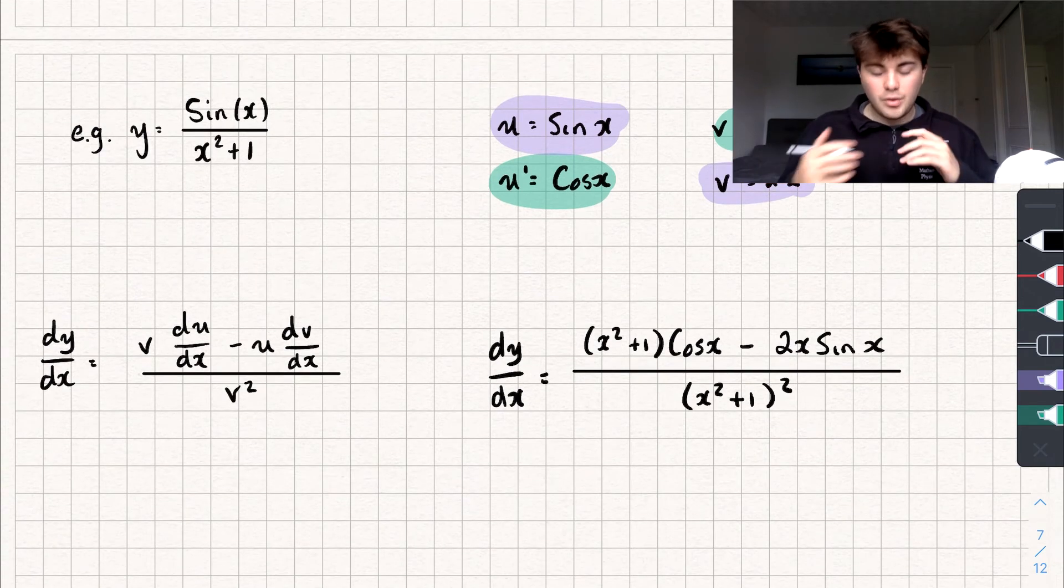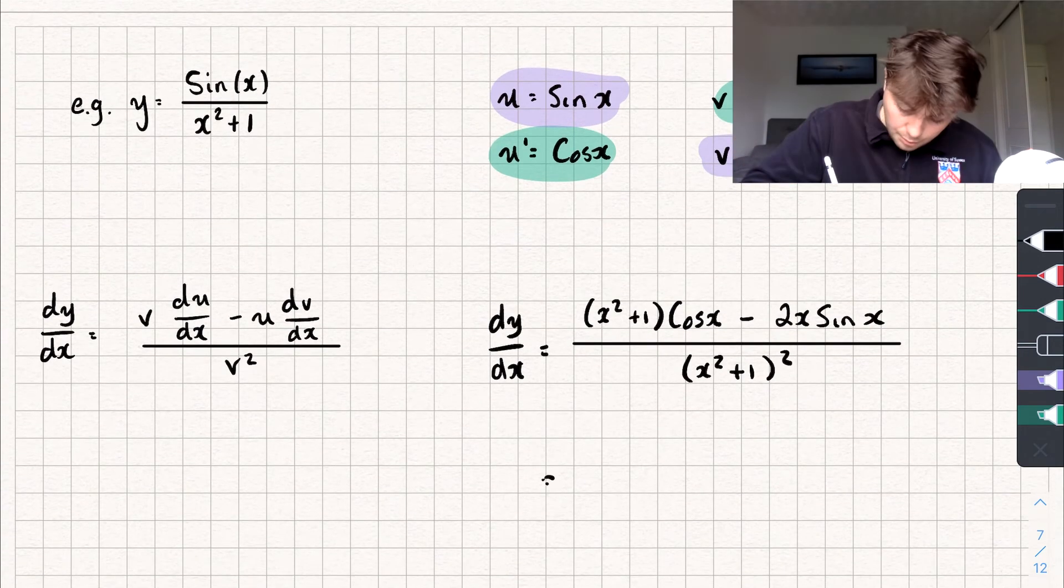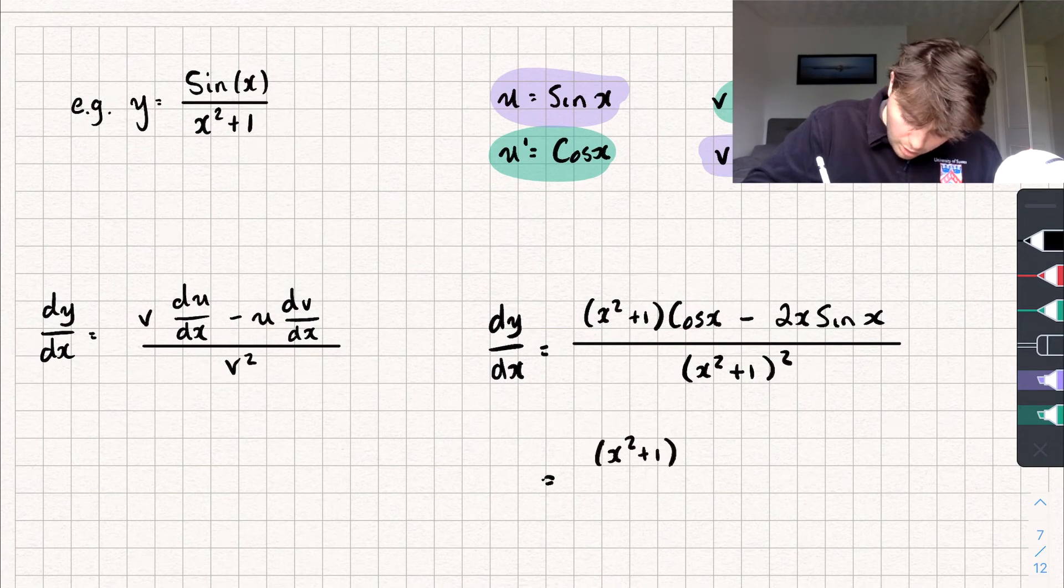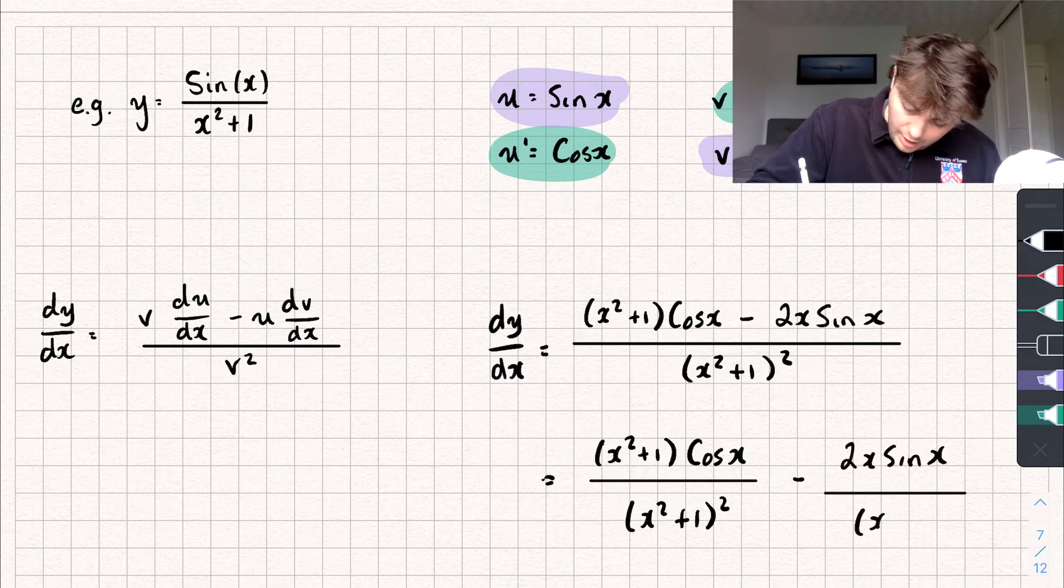And that would be the derivative. But we can simplify it a tiny bit. We can split it into two separate fractions. So we can write it as (x squared plus 1) cos x over (x squared plus 1) all squared, subtract 2x sine x divided by (x squared plus 1) all squared.